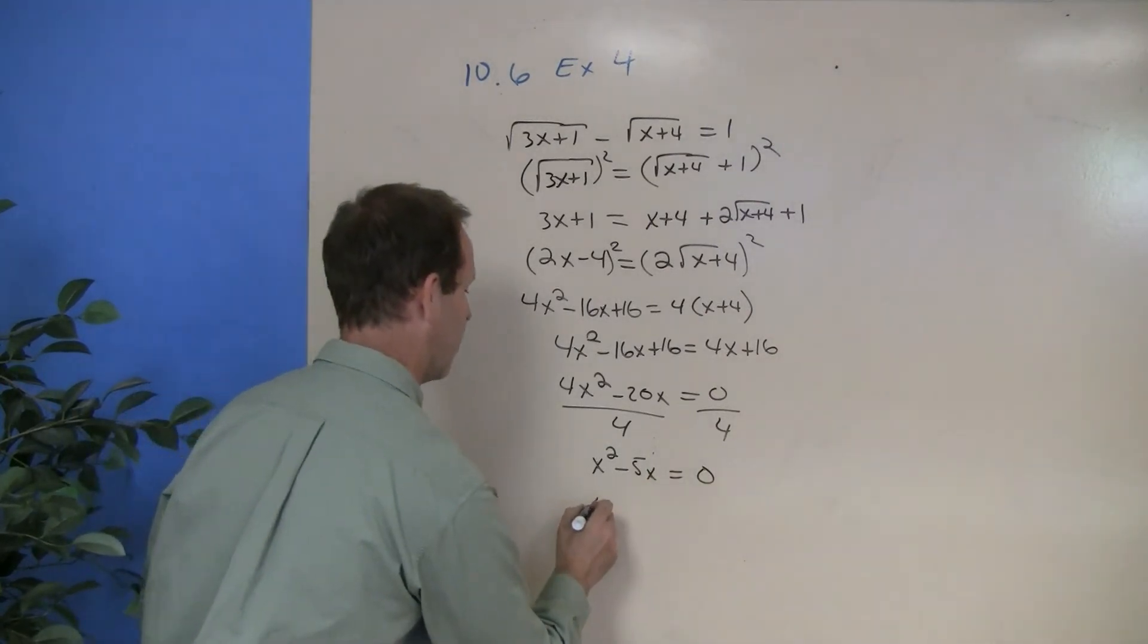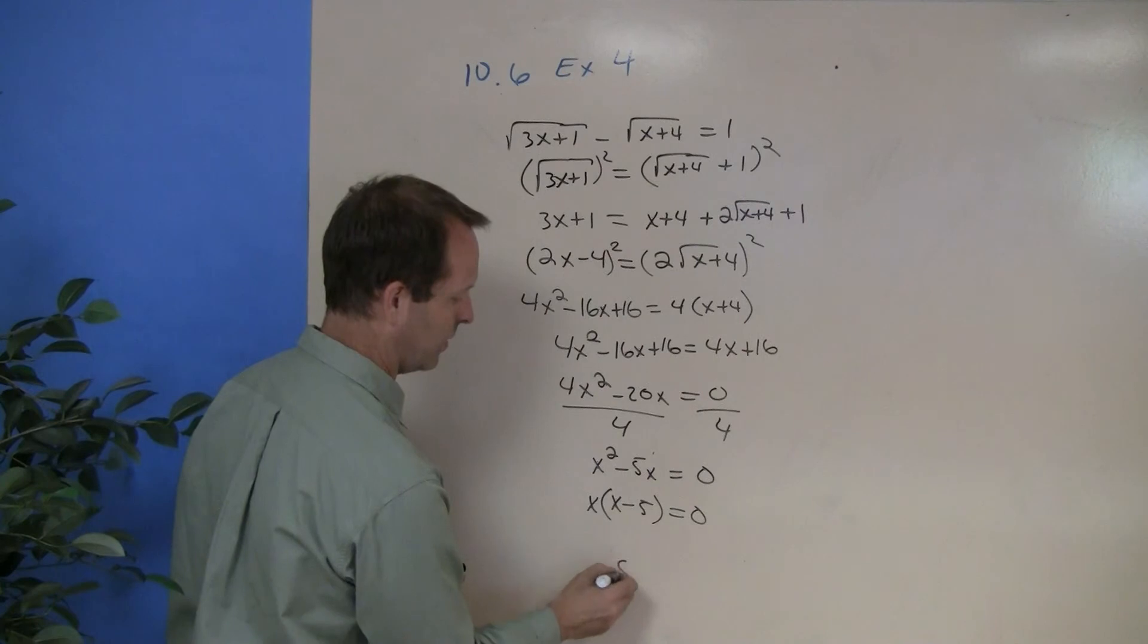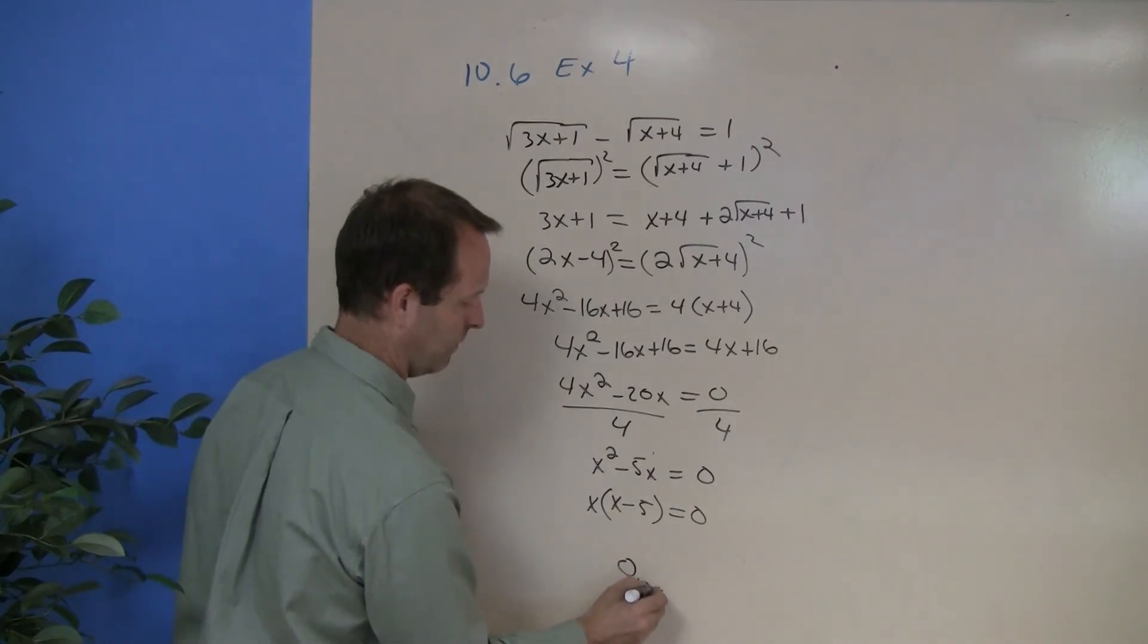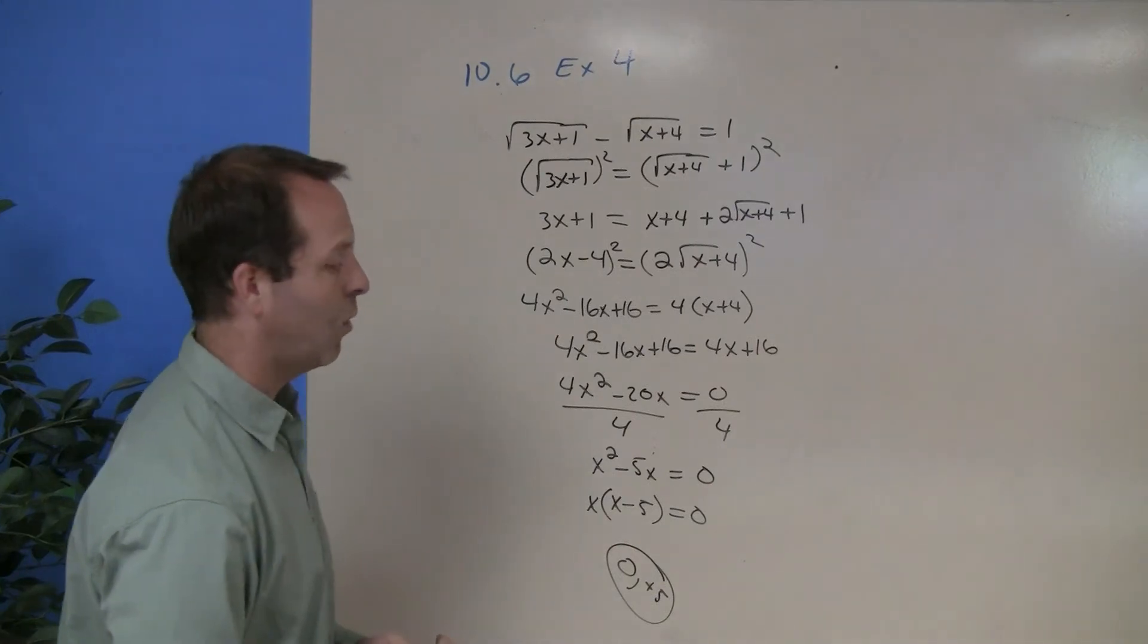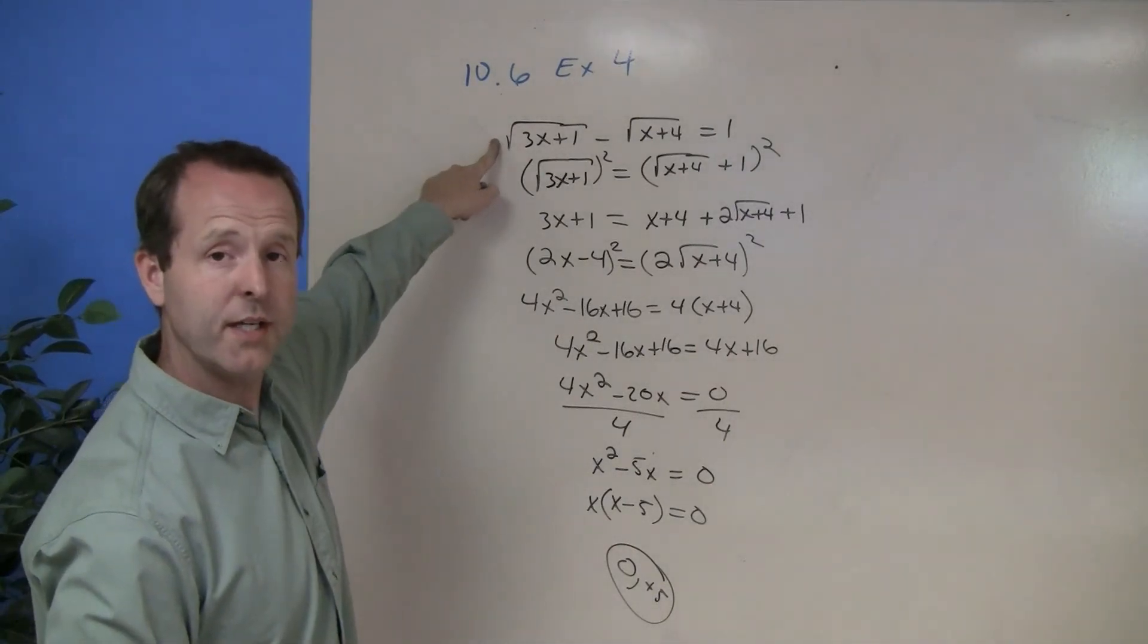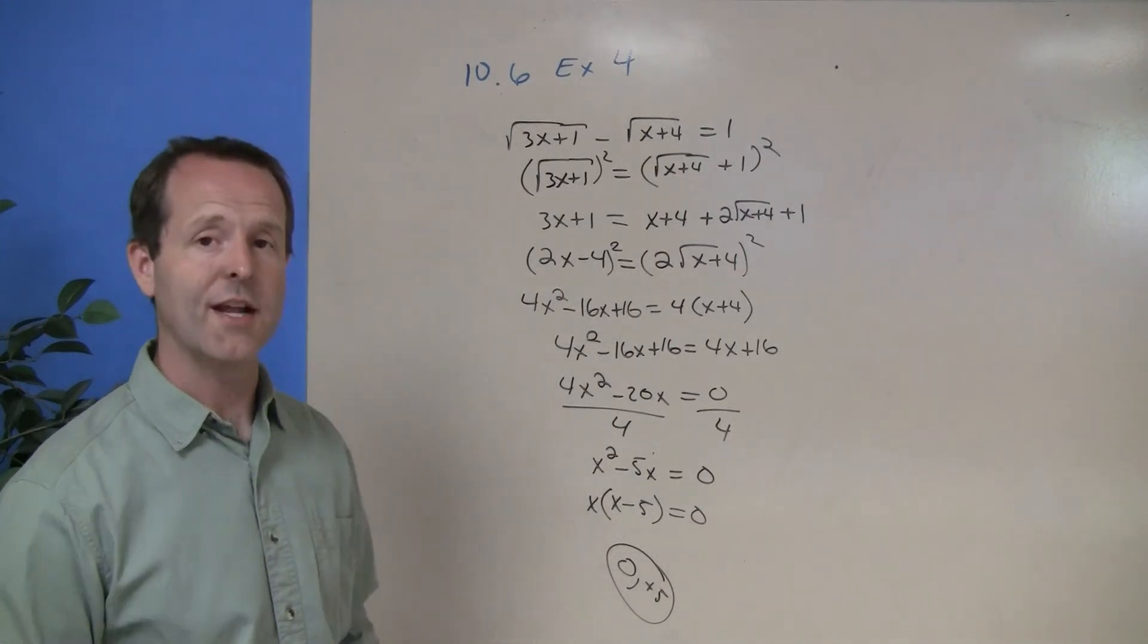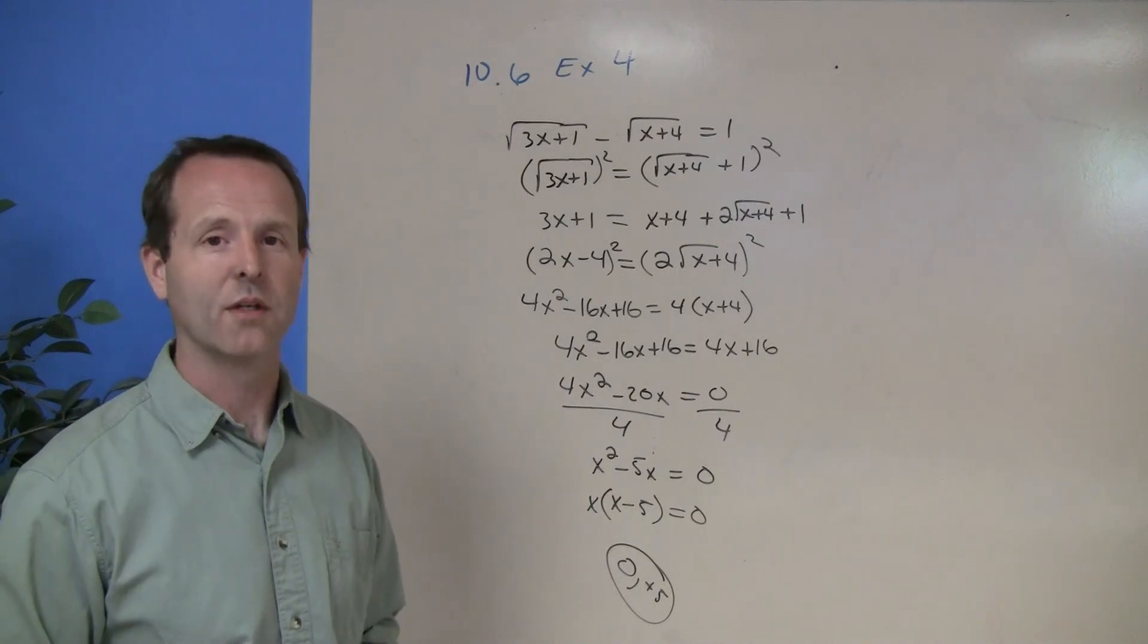Factor this guy in. So I have x times x minus 5 equals 0. My two solutions then are 0 and positive 5. And I want to check both of those solutions into this original equation to find out if both of these solutions are indeed real, true solutions. And I'll leave that check for you. I trust my work.